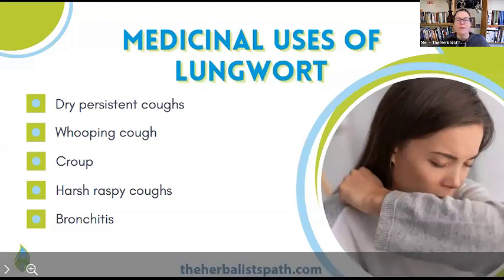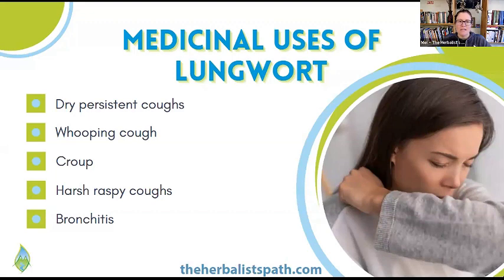That brings me to the doctrine of signatures — like treats like. If you look at the lungwort lichen, it looks very much like you would imagine lung tissue, only it's green. Hopefully your lung tissue is still pink. If it's not, you might benefit from using lungwort lichen, because it does have an ability to draw out pollutants as well. It's also got that pliable, rubbery consistency that you'd dream your lung tissue might have. It's absolutely incredible for bronchitis, whooping cough, or when you have a really harsh, raspy, dry cough.